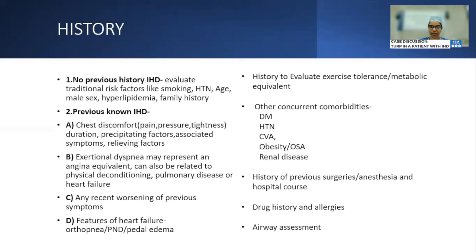In taking history, assess previous history of IHD. For known IHD patients, ask about chest discomfort, exertional dyspnea as an anginal equivalent, recent worsening of symptoms, and features of heart failure such as orthopnea, paroxysmal nocturnal dyspnea, and exertional dyspnea. Evaluate exercise tolerance and concurrent comorbidities like diabetes mellitus, hypertension, CVA, obesity, and renal disease. Take history of previous surgeries or anesthesia, detailed drug history including allergies, and perform a thorough airway assessment.